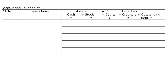Transaction one: started business with cash rupees 50,000 and goods rupees 30,000. The total capital is rupees 80,000. So cash is 50,000, stock is 30,000, and capital is 80,000.